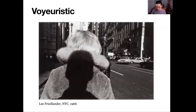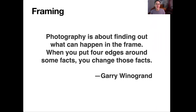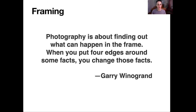This is Lee Friedlander. Images like this are commonplace now, but at the time we hadn't seen anything like it. As Gary Winogrand said, photography is about finding out what can happen in the frame. When you put four edges around some facts, you change those facts. When you put four edges around a picture, you create a new world. So you are creating — this is a subjective choice on your part — you're making a selection that reflects your view and your point of view.